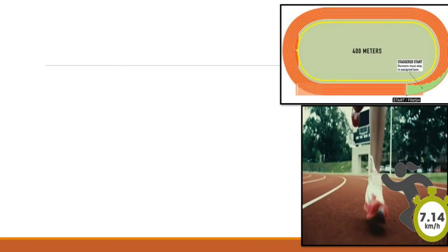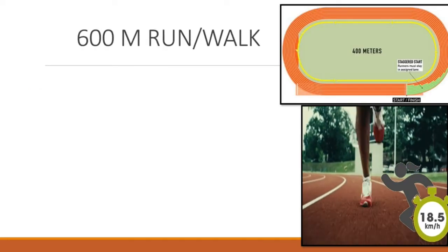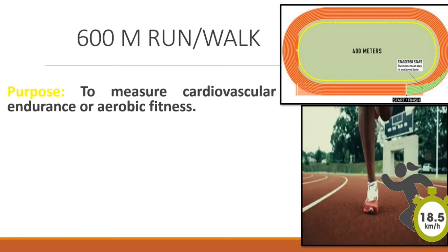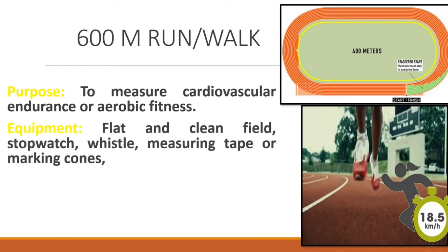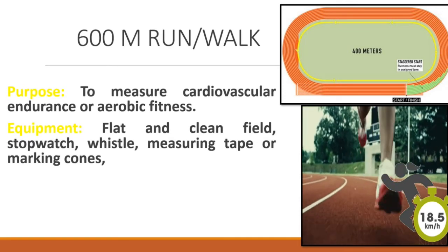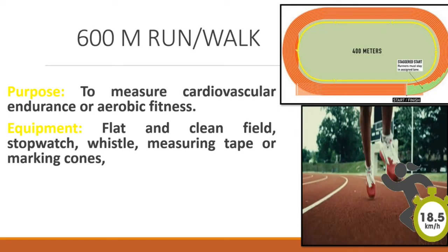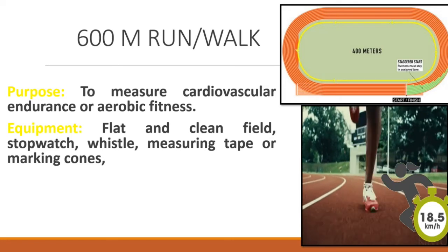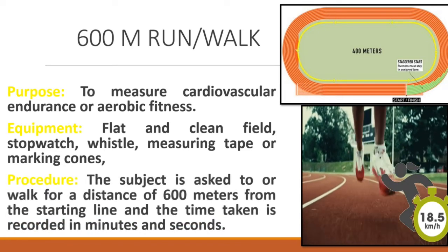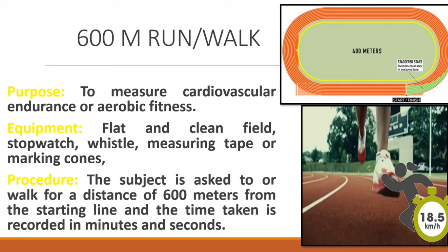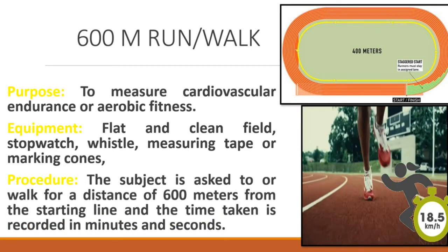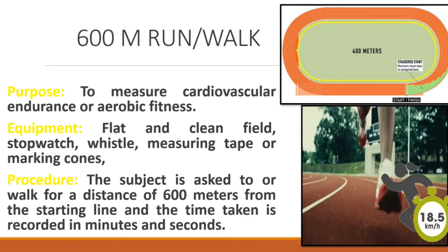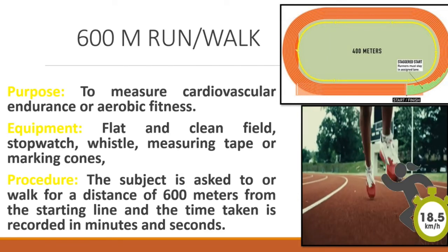600m Run Walk. Purpose: To measure cardiovascular endurance or aerobic fitness. Equipment: Flat and clean field, stopwatch, whistle, measuring tape or marking cones. Procedure: The subject is asked to run or walk for a distance of 600m from the starting line and the time taken is recorded in minutes and seconds.